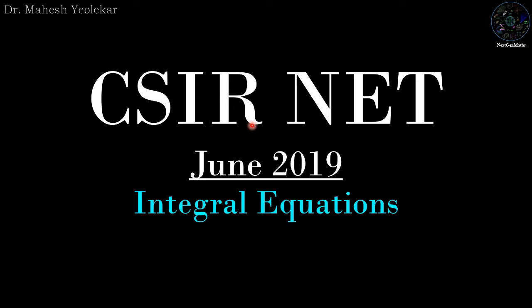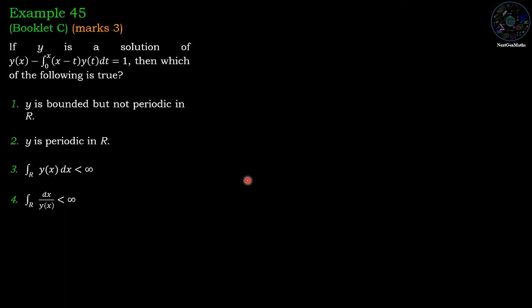Hello friends, in this video we are going to discuss the problem of integral equation from CSIR NET June 2019. Example number 45 from booklet C, which is of marks 3. If y is a solution of y(x) minus integration from 0 to x of (x minus t) y(t) dt equals 1, then which of the following is true.